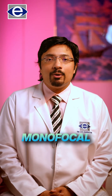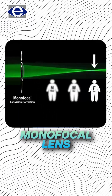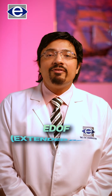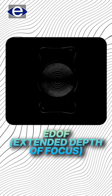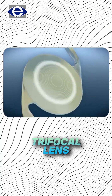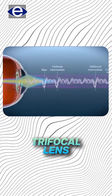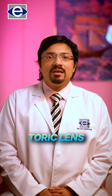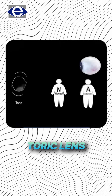First is the monofocal option — monofocal lenses generally correct distance vision, but for near you have to use glasses. Second is EDOF lenses, that is extended depth of focus lenses, which correct distance and intermediate vision, but for near you still need glasses. Third is the most advanced option — trifocal lenses — which correct distance, intermediate, and near vision. Fourth is toric lenses, which correct corneal curvature changes or cylindrical power during cataract surgery.